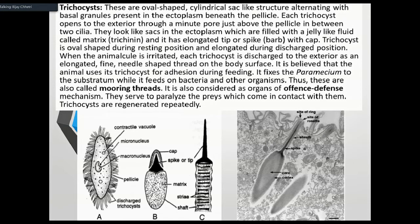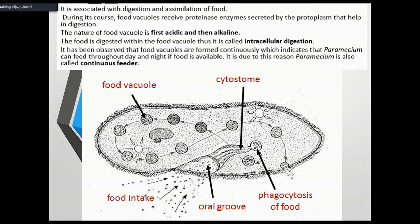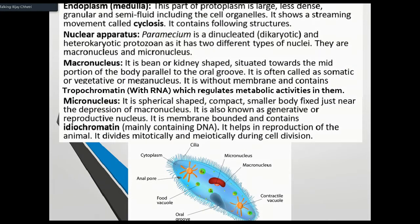Now we need to discuss endoplasm. We need the nucleus and vacuole. Paramecium is di-caryotic — it has two types of nuclei. The large-sized nucleus is the macronucleus, and the small one is the micronucleus. The macronucleus is involved in asexual reproduction and metabolism.